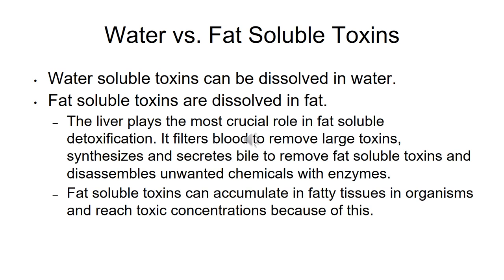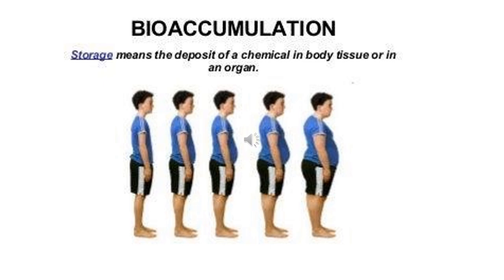Some environmental toxic substances dissolve in water, while others are only fat-soluble. Fat-soluble toxins are particularly dangerous because they accumulate inside an organism's fatty tissues, becoming more concentrated than the original exposure dose. Even if the initial exposure wasn't toxic, the concentration in fatty tissue can build up to toxic levels over time and cause damage. This process of fat-soluble toxins accumulating inside biological organisms is called bioaccumulation — storage of a chemical in body tissue — and it increases in concentration across the organism's entire lifespan.